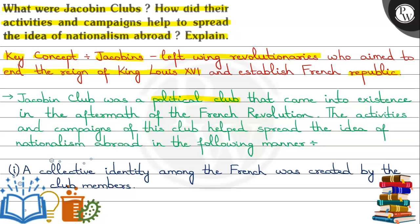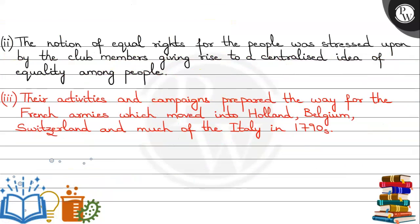First of all, in France, it created a collective identity among the people, created by the club members. Secondly, the Jacobin Club members placed a lot of emphasis on equal rights for everyone, which gave rise to the centralised idea of equality among people. Thirdly, their activities and campaigns paved the way for French armies to move into Holland, Belgium, Switzerland, and Italy in the 1790s.